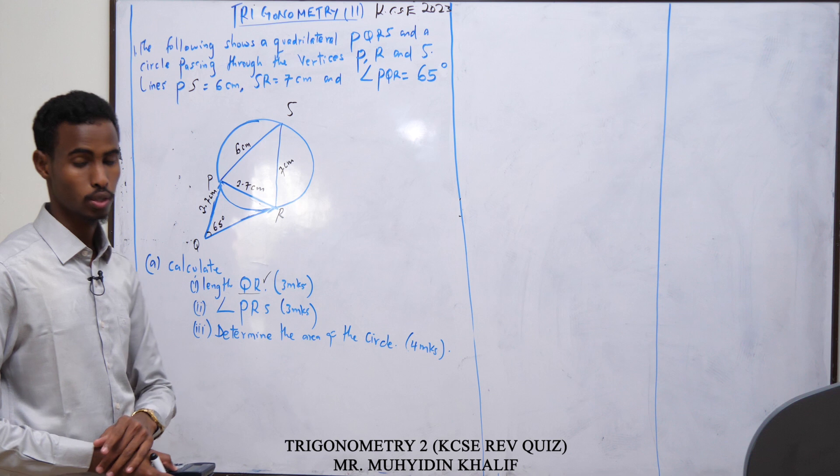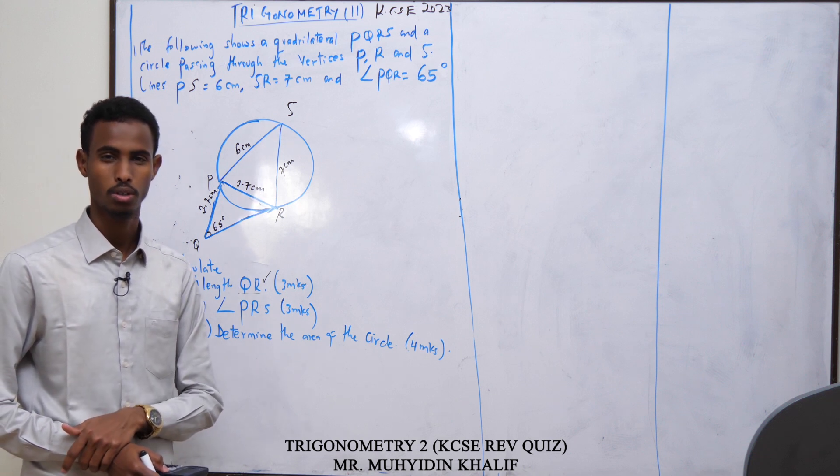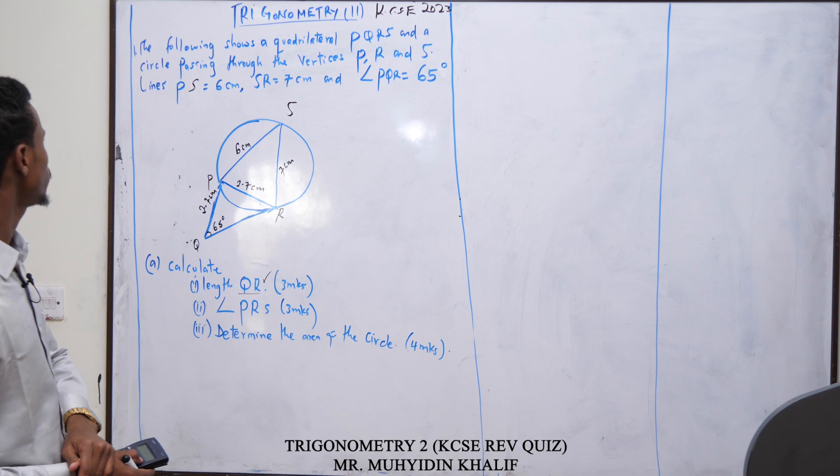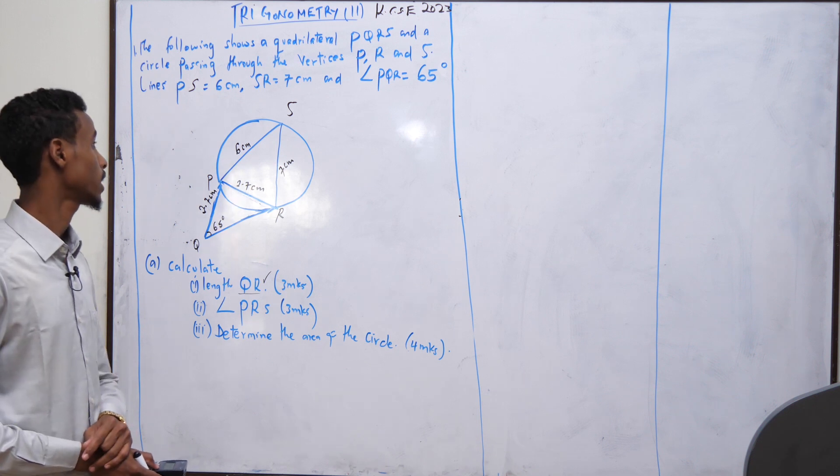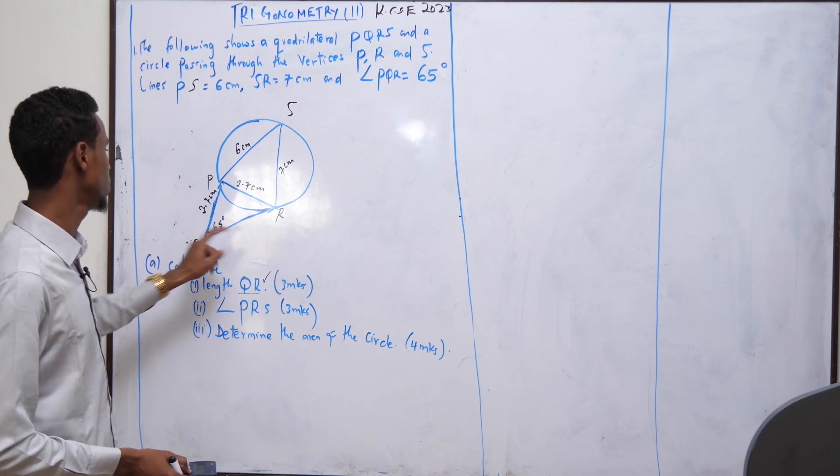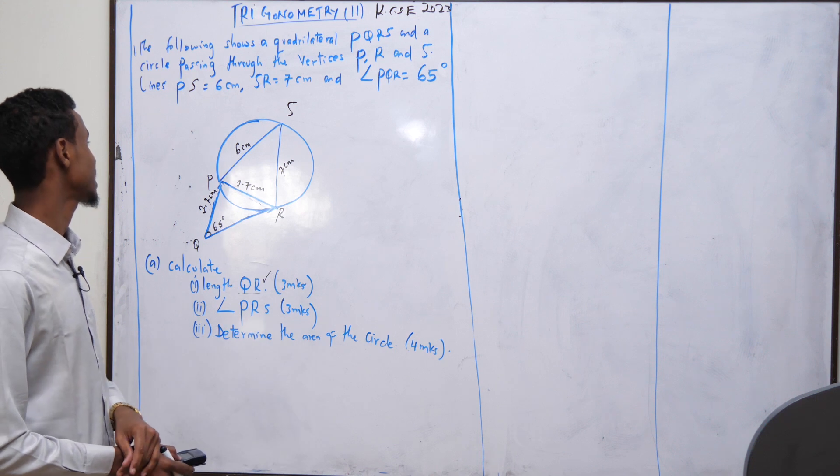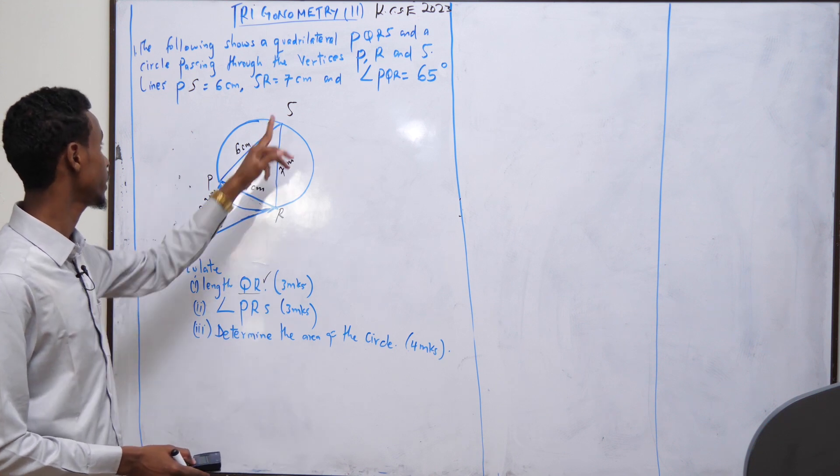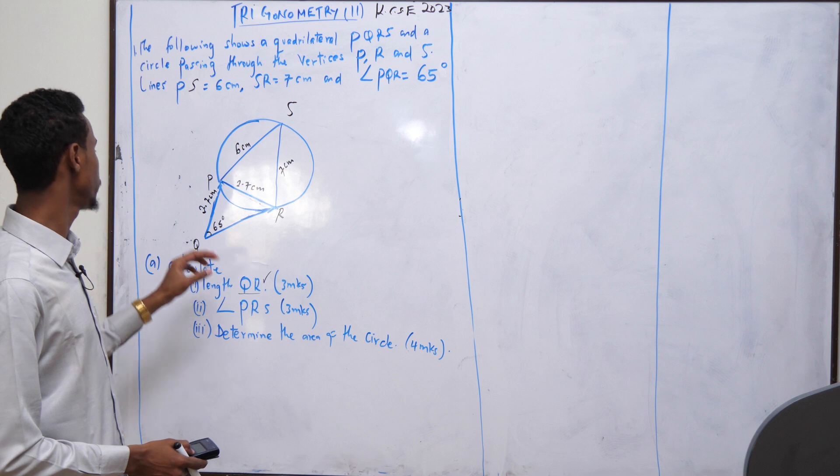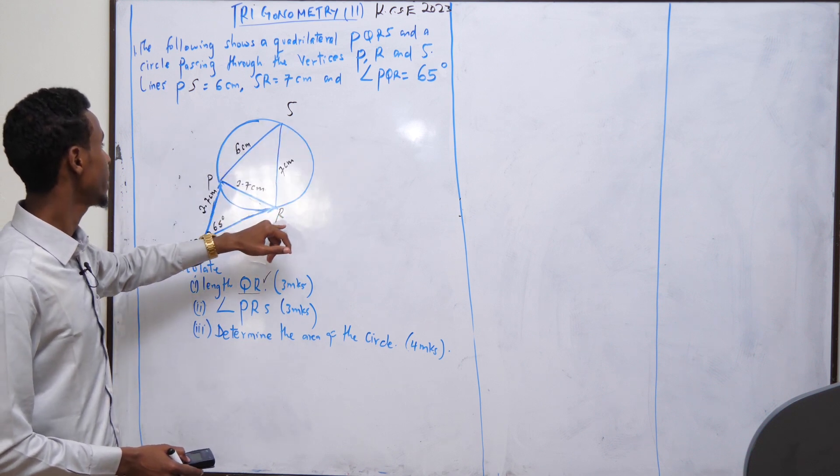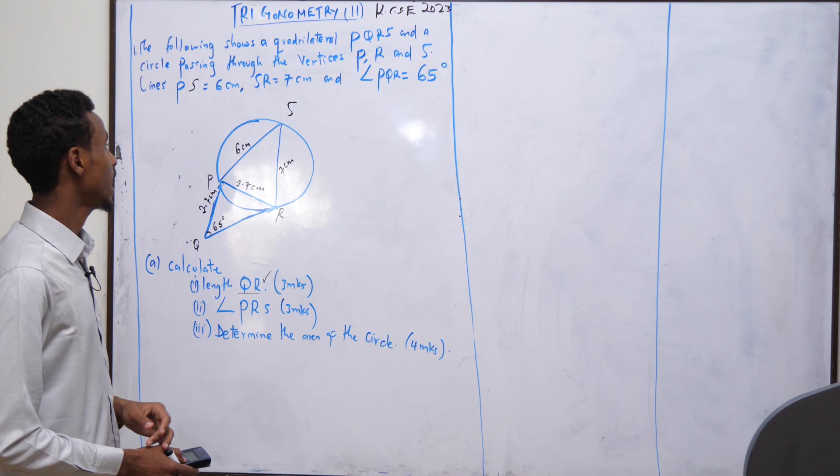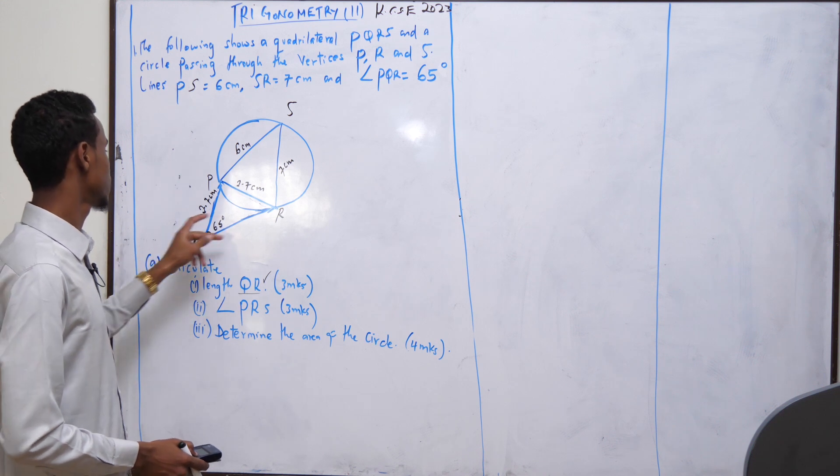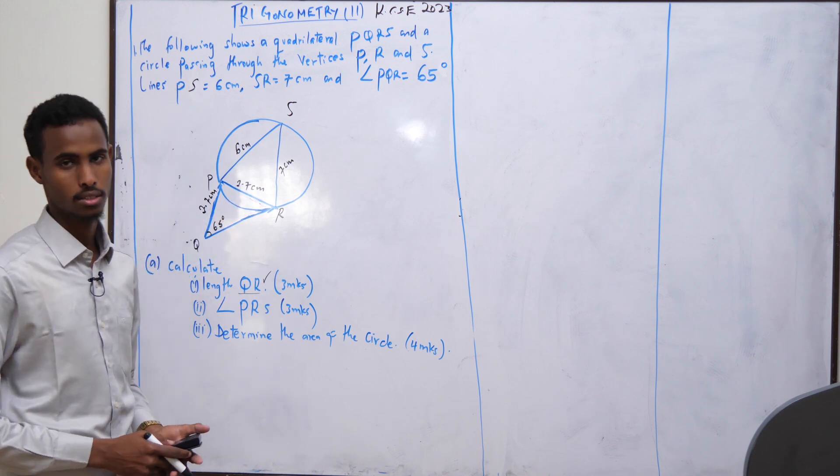Let's read the question together and see the proper solution. The following figure shows a quadrilateral PQRS, and a circle passing through points P, R, S. Line PS equals 6 centimeters, SR equals 7 centimeters, and angle PQR equals 65 degrees.